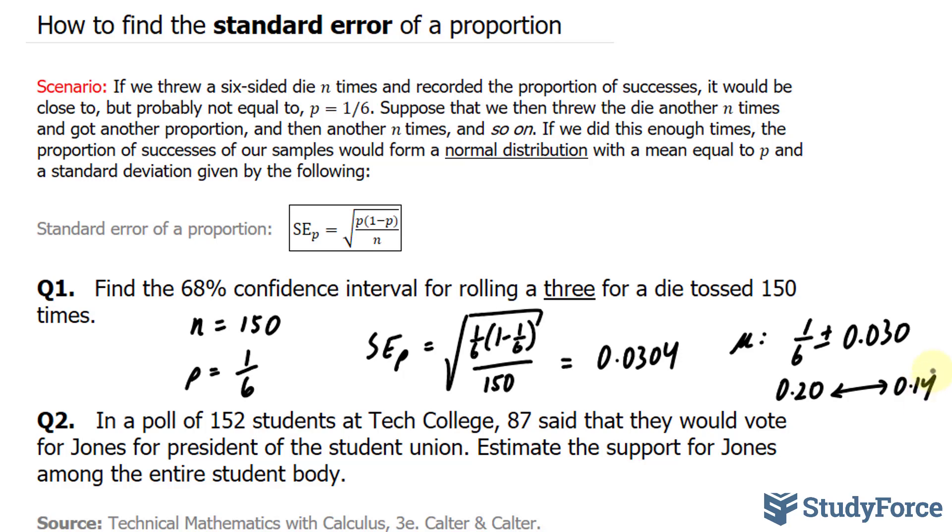Therefore, with a confidence of 68% that in 150 rolls of a die, the proportion of 3s will lie between 0.14 and 0.20. And the reason why I say 68% probability is because we did not multiply our standard error by anything. If we had multiplied it by 2 before adding and subtracting to 1 over 6, then that would assume a 95% confidence interval. We didn't do that, so it's assumed to be 68%.